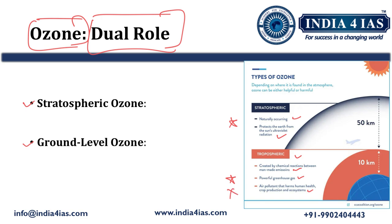At the ground level, ozone is a pollutant. It does not have any beneficial effects on the ecosystem, crop production, or health of living beings. It is harmful to human health and the health of other living beings — harming human health, crop production, and ecosystems.